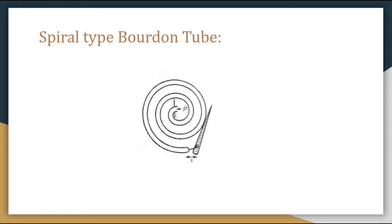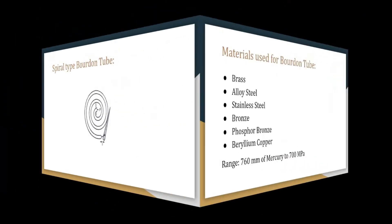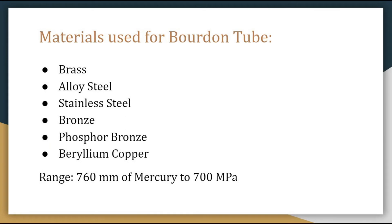So the sensitivity is greater in the spiral type Bourdon tube compared to the C-type Bourdon tube. Again, in the spiral type we observe displacement and measure pressure in terms of displacement. The materials used for construction of Bourdon tubes are brass, alloy steel, stainless steel, bronze, phosphor bronze, beryllium copper, etc. The range it covers is 760 mm of mercury to 700 megapascals.